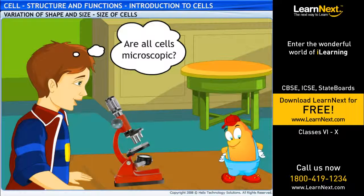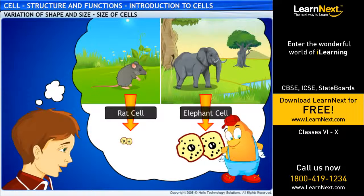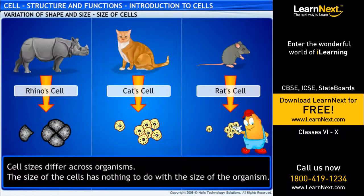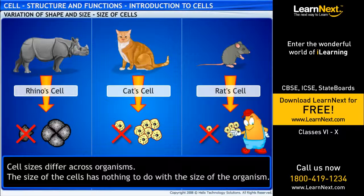Really? Wow! But how about cell sizes — are all cells microscopic? I would have thought the cells of smaller organisms were smaller than those of big animals like an elephant. Cell sizes differ across organisms. However, the size of the cells has nothing to do with the size of the organism. The cells in a rhino's body may not be bigger than the cells in the body of a cat or a rat.